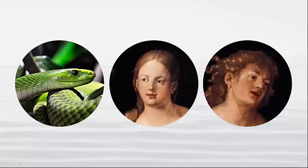But there was a serpent in the garden who tempted Eve to eat the fruit. Eve ate and then gave the fruit to Adam, who also ate. What do the trees, the fruit, and the serpent represent?